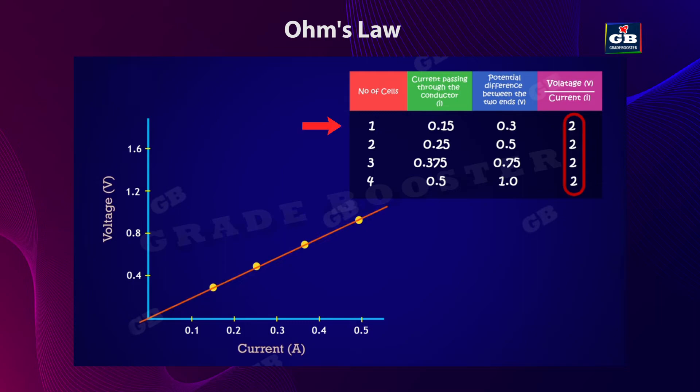With one cell, the current value is 0.15 and voltage is 0.3. With two cells, the current value is 0.25 and voltage is 0.5. With three cells, the current is 0.375 and voltage is 0.75. With four cells, the current is 0.5 and voltage is 1.0. So, we have plotted these values on the graph.